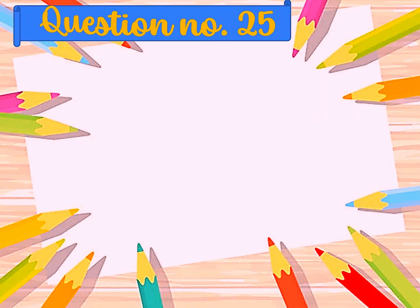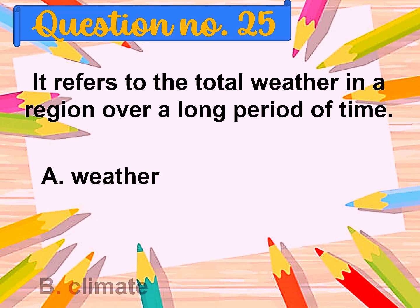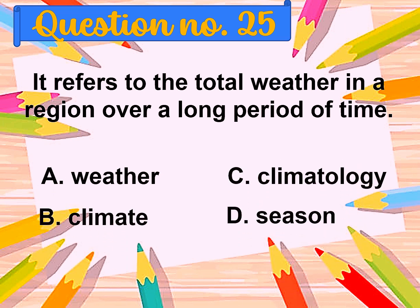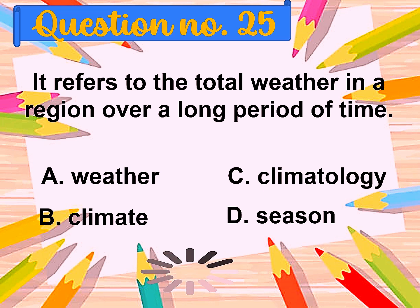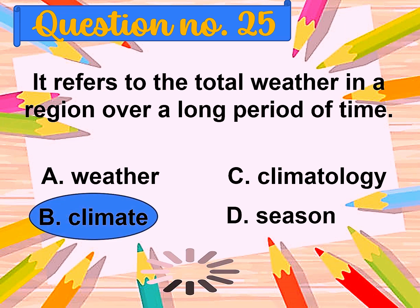Question number twenty-five: It refers to the total weather in a region over a long period of time. A. Weather, B. Climate, C. Climatology, D. Season. The correct answer is climate.